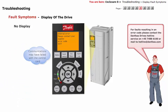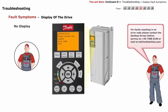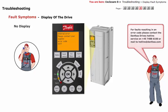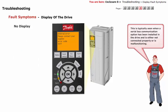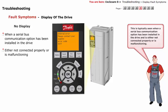An error code in the FCU automation drive indicates that communications may have failed with the control card. For faults resulting in an error code, please contact the Danfoss drives hotline service on 457488 6100 or email hotline at danfoss.com. This is typically seen when a serial bus communication option has been installed in the drive and is either not connected properly or is malfunctioning.